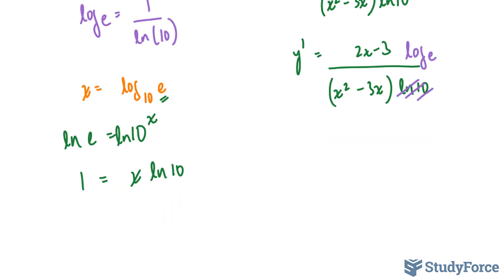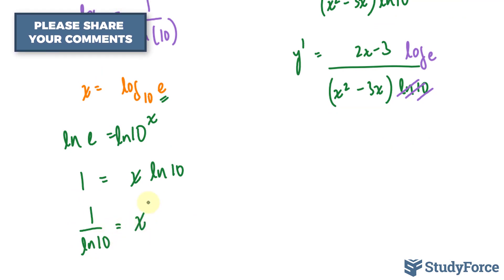Dividing both sides by ln 10, 1 over ln 10 equals x. And we set x as log e. And there you have it.